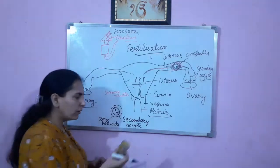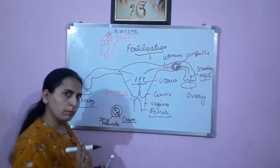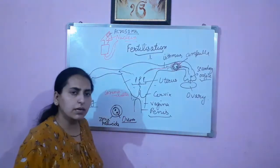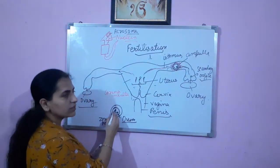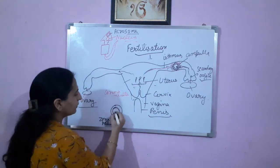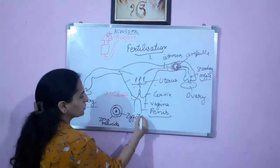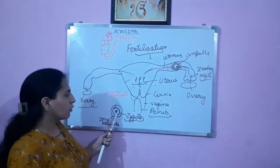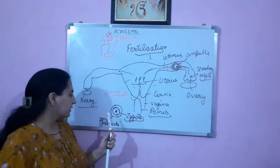Now we have the ovum. The nucleus of the ovum and the nucleus of the sperm will get fertilized. It is not ovum anymore — it will become a single cell, that is zygote. This zygote is surrounded by the zona pellucida. Outside the zygote there is a plasma membrane, and outside that membrane there is zona pellucida.